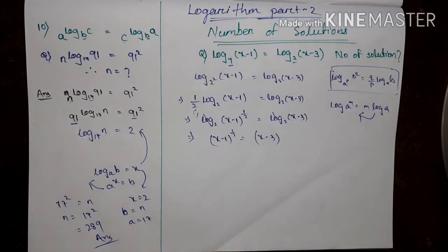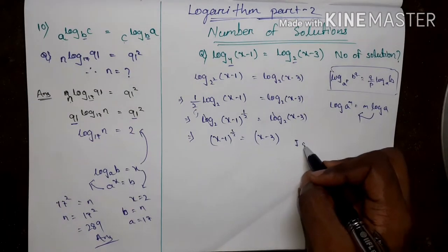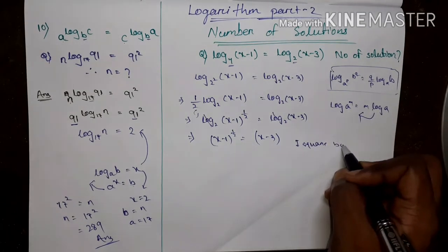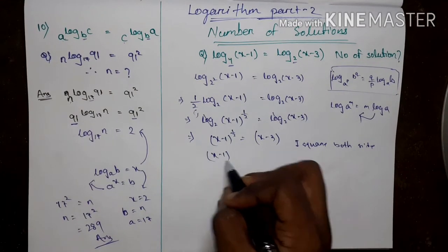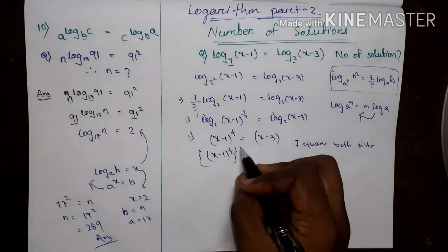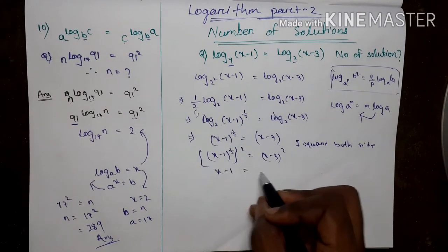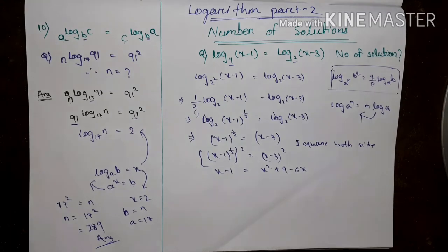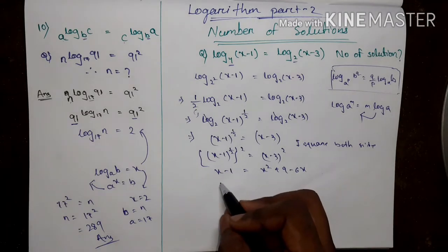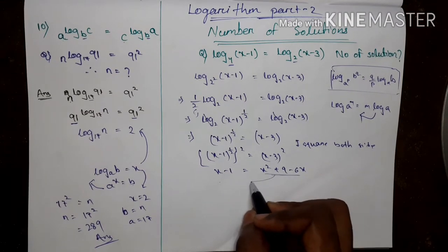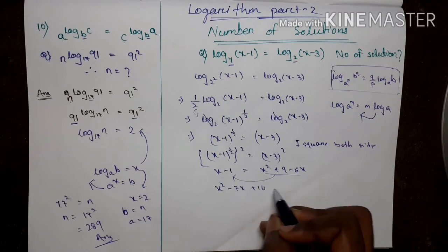Using simple algebra — square both sides. Then (x-1)^(1/2) squared equals (x-3) squared, which gives x minus 1 equals x squared plus 9 minus 6x. Rearranging, we get x squared minus 7x plus 10 equals 0.